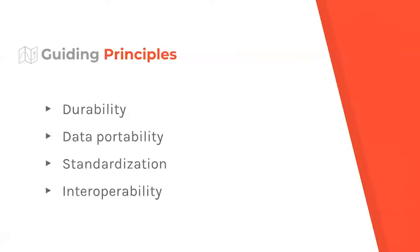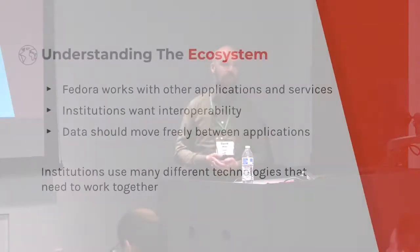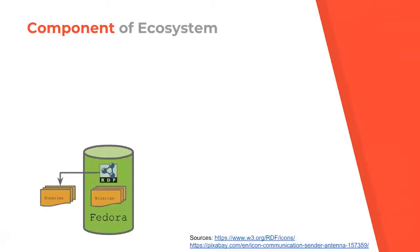There are a number of guiding principles in terms of what we're trying to achieve with the software around durability, but also data portability — being able to get things into Fedora and out of Fedora as easily as possible. Certainly standardization has been a big focus, trying to get away from doing things in a really custom way, which to some degree we did in the past. And particularly on interoperability — we are very focused on trying to interoperate with different applications and services that institutions are using, because institutions really have a strong desire for this interoperability and making sure that data can move between applications.